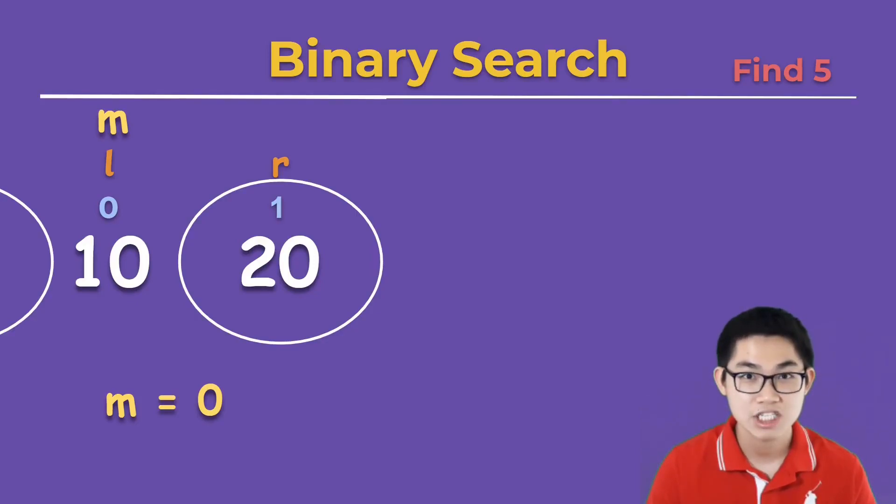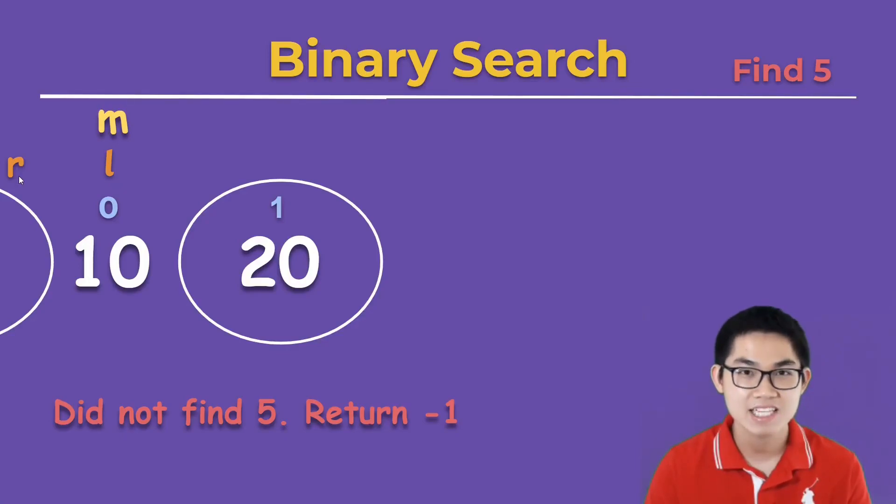The first thing I'm going to do is check the number at mid. 5 is smaller than 10 so we move R over to this side. Now notice when R is to the left of L, this indicates that number 5 does not exist inside the array. In this case you can either return false or minus 1.